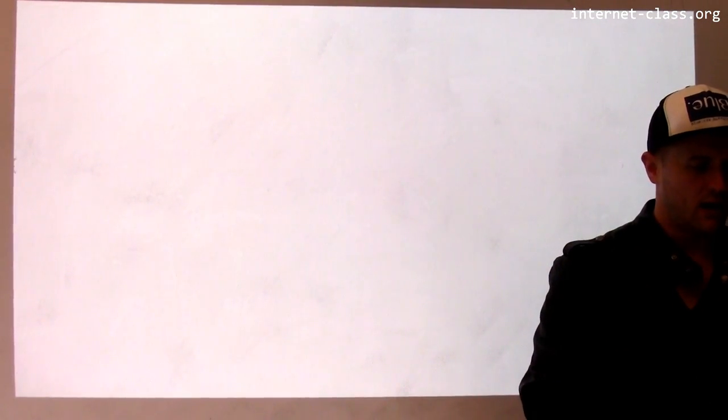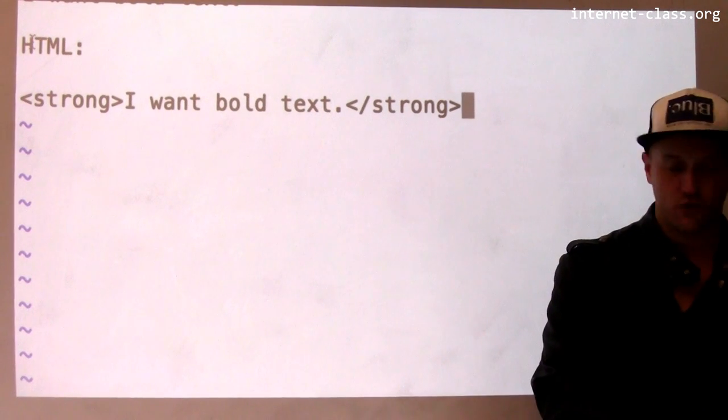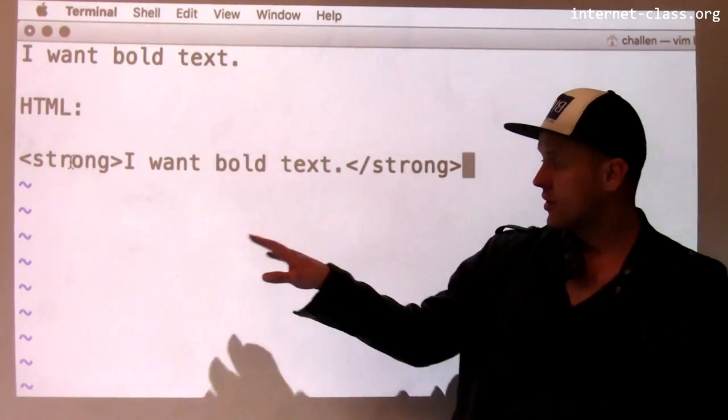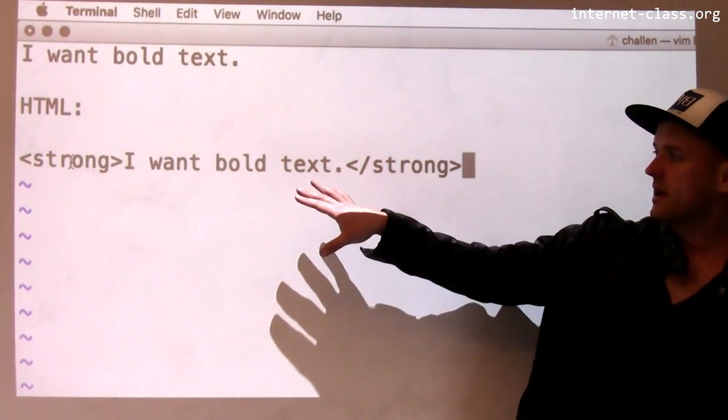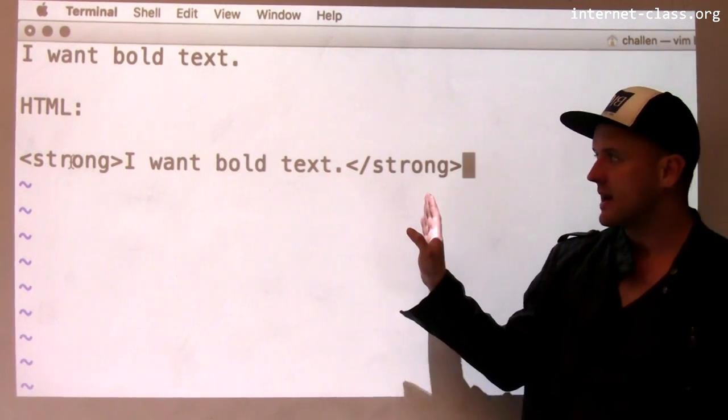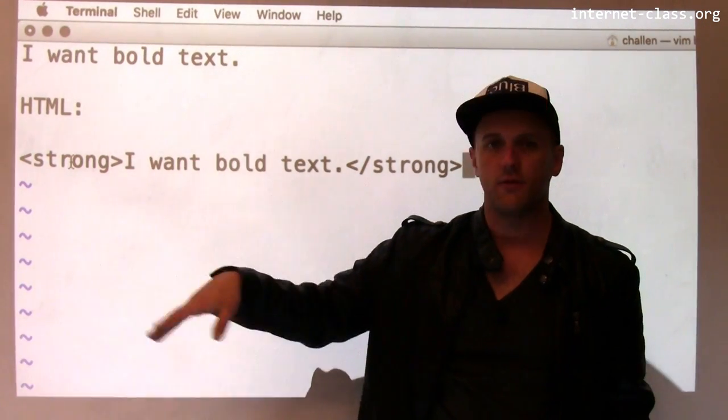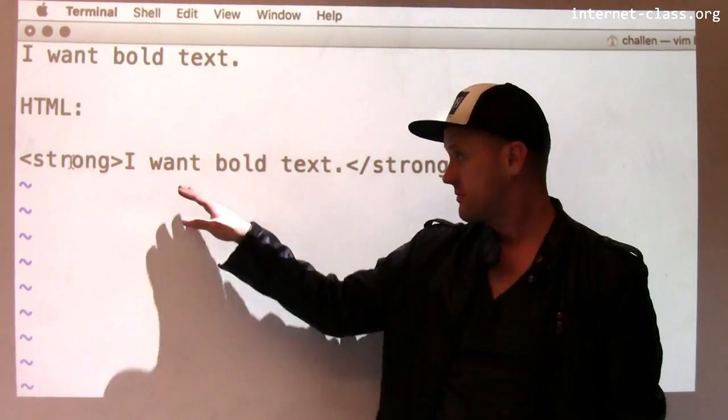So the strong tag indicates that the contents here should be strong. They should be stronger than the text around them. And typically, browsers will interpret the strong tag as meaning this content is now bold. So if you look at this in a browser, you would see that this is bold.